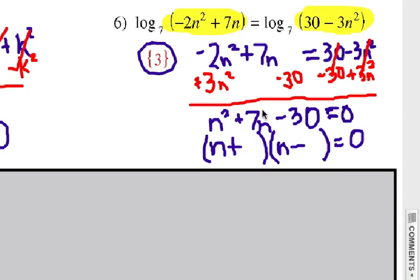N squared plus 7n minus 30 equals 0. I'm going to factor that. Factors of 30, how about 6 and 5 or 3 and 10? I'm going to use 3 and 10. I'm going to make the 10 positive and the 3 negative. That will give me 10n minus 3n when I use FOIL there. The signs work out properly. That gives me an answer of negative 10 and positive 3.